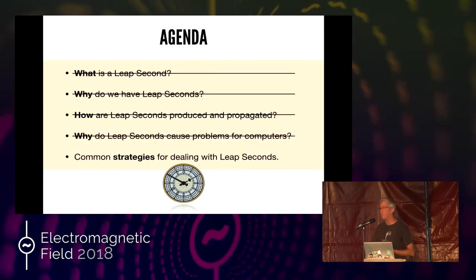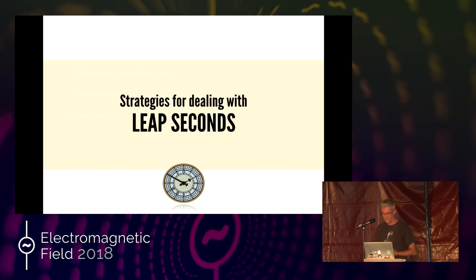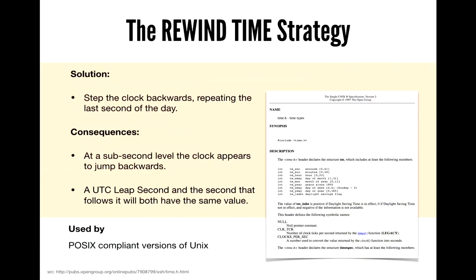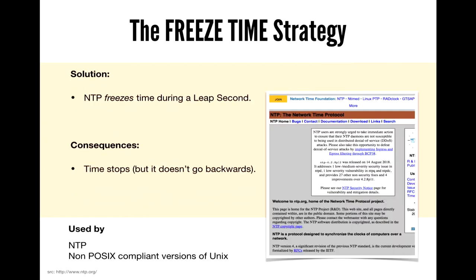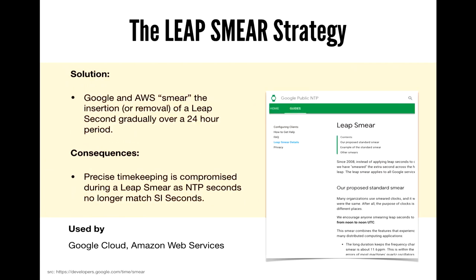Let's look at some common strategies for dealing with these. Not all versions of Unix and Linux are POSIX compliant, but the ones that are step the clock back — essentially the clock goes forward, plays out the leap second, then at the back steps it back by one second. NTP does it slightly differently — it just stops the clock for one second and moves on again, so it doesn't go backwards. And this has become quite popular recently: leap smearing. Google tried this originally.